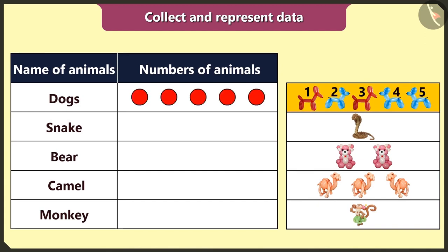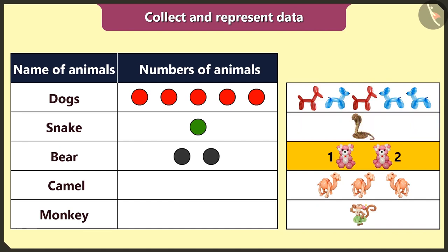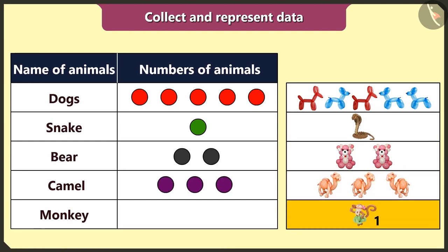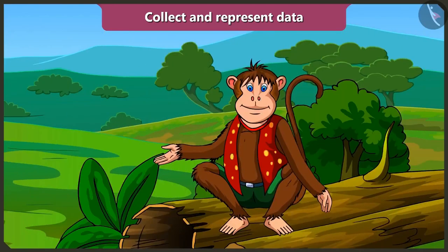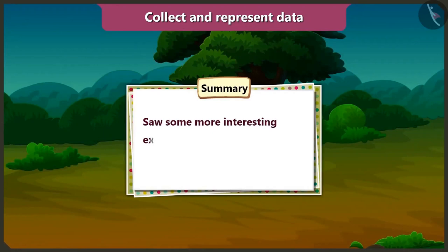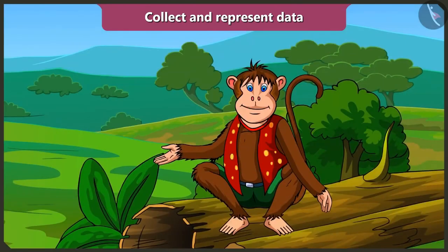There are five dogs, so five circles. One snake, so one circle. Two bears, so two circles. Three camels, so three circles. And one monkey, so one circle. Wow! By representing data like this, I can easily remember so much information. Children, in this video today we saw some more interesting examples of collecting data and representing it in a table. In the next video, we will learn how to interpret data from the given table.